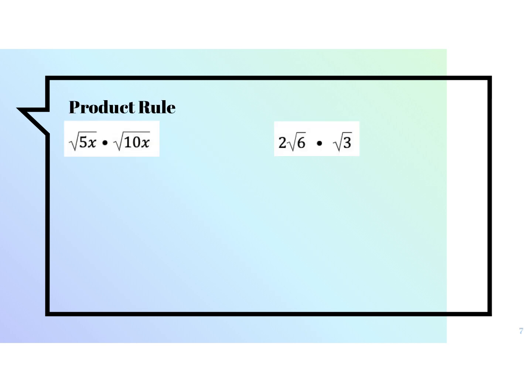The next thing you're going to have to do is the product rule — basically, this is just multiplication. When you're multiplying, you multiply the number out front times the number out front, and then the number underneath the radical times the number underneath the radical. Then you're going to try to simplify just like we did. If there are no numbers out front, they're imaginary ones, so I would do 1 times 1 which gives me 1 — but I don't really need that there, so I'm going to leave it out.